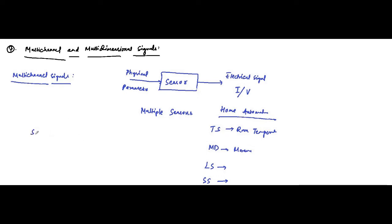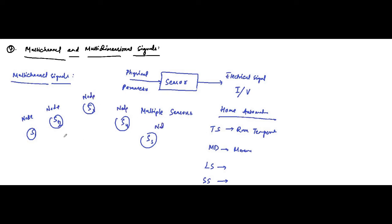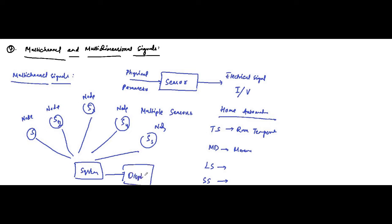Signals are generated from multiple sources — each sensor or source behaves as a node. It is fed to a common system where signal conditioning and signal processing are performed, and then it goes to display and analysis. Multiple channels are there for the transmission and reception of these signals. This home automation system, where signals are transmitted from the sensors and received by the system, is an example of a multichannel signal.